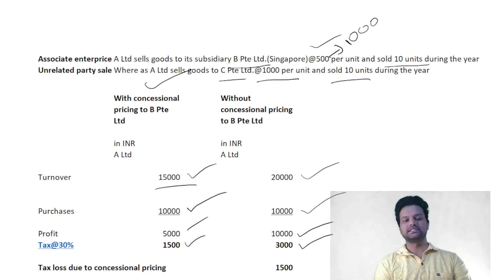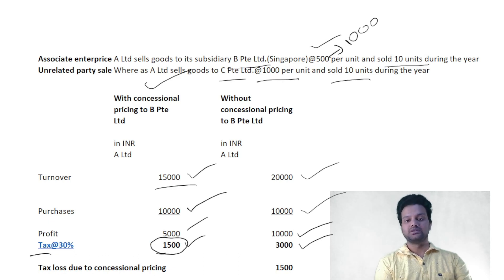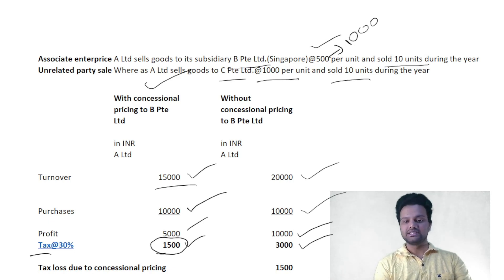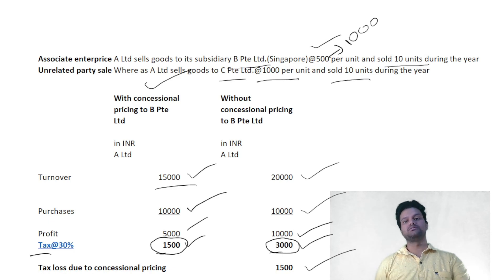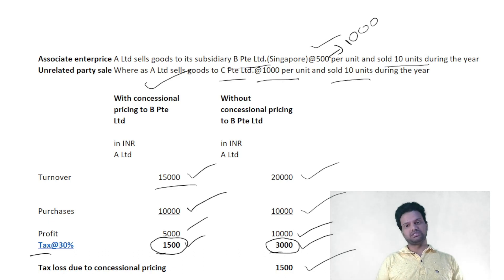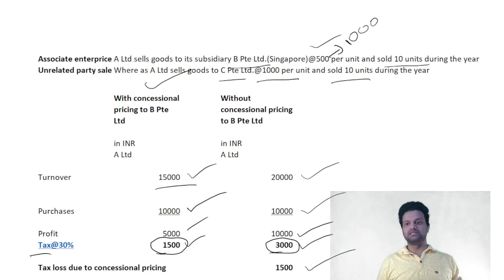If you observe both cases: with concessional pricing, the central government gets only 1,500 rupees in tax from A Limited; but without concessional pricing, the government would have gotten 3,000 rupees. That means the government is losing around 1,500 rupees on this transaction. A Limited is happy, BPT is happy getting a concessional price and a competitive advantage — but the central government is unhappy because it is getting lesser taxes.